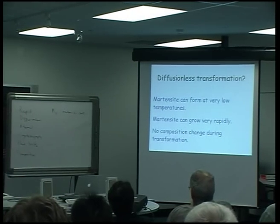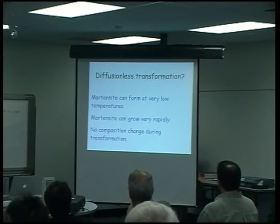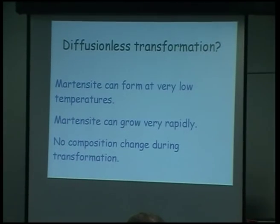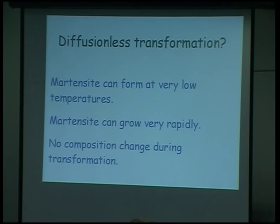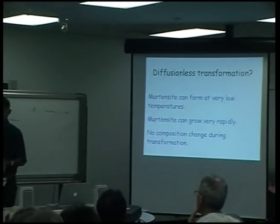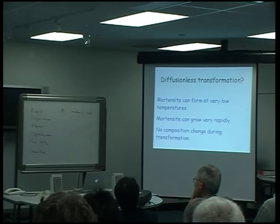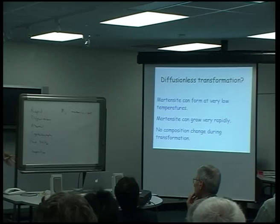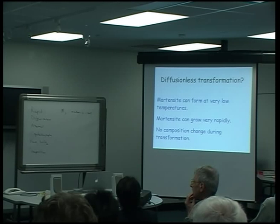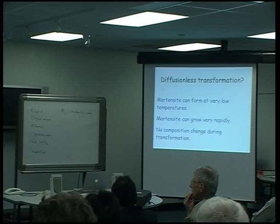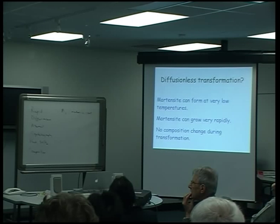What is the evidence that the transformation is diffusion-less? First, it can grow at very low temperatures — 4 Kelvin — where diffusion is impossible. It isn't true that martensite always forms very rapidly; you can apply stress and see it growing gently. But it can grow at the speed of sound inside a material, more than a thousand meters per second. The largest rate ever reported for a diffusional transformation is about 80 meters per second — the solidification rate of nickel. Martensite in iron can happen at more than a thousand meters per second.